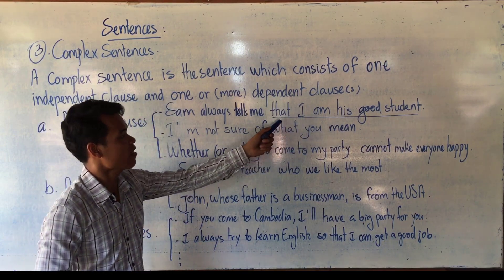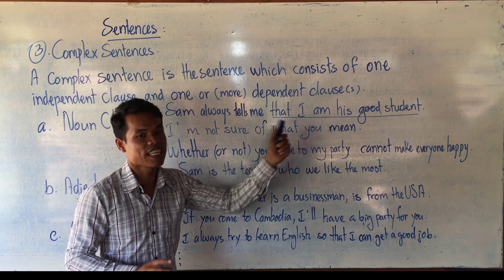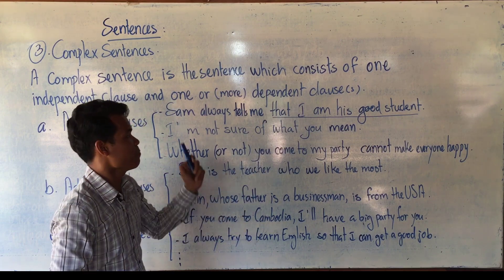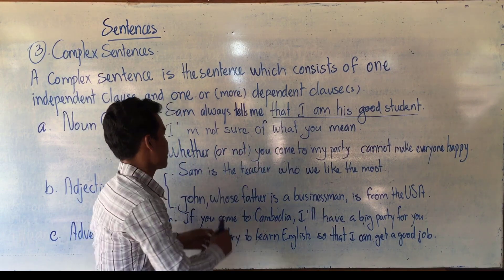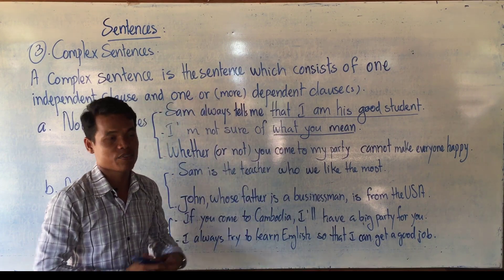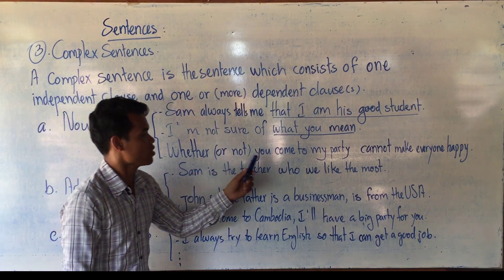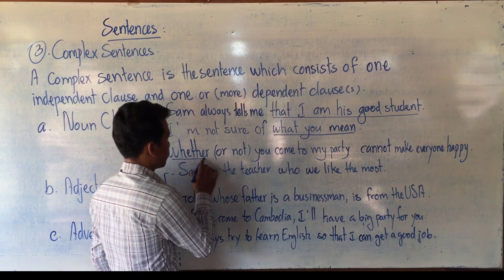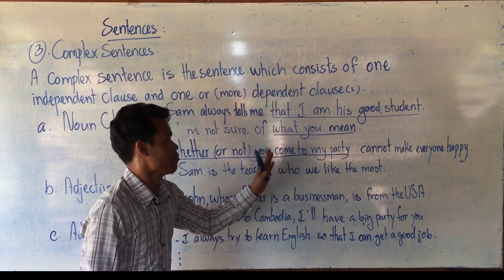Looking at noun clause examples: the that-clause here functions as a direct object, because 'tell somebody something' — that something is the direct object. So it is a noun clause as direct object. Example two: 'I'm not sure of what you mean' — 'what you mean' is a noun clause functioning as object of the preposition 'of.' Example three: 'Whether or not you come to my party cannot make everyone happy' — here the noun clause functions as the subject of the verb.